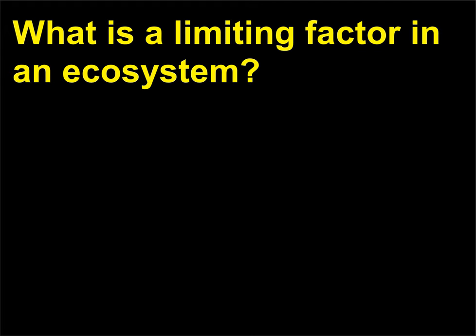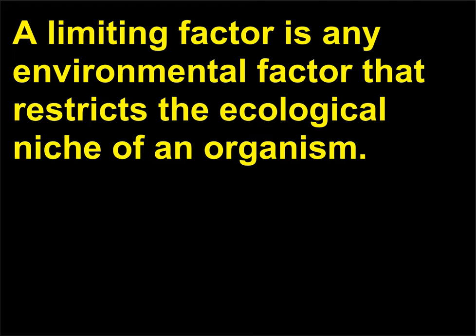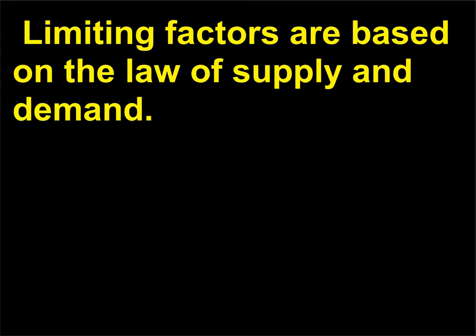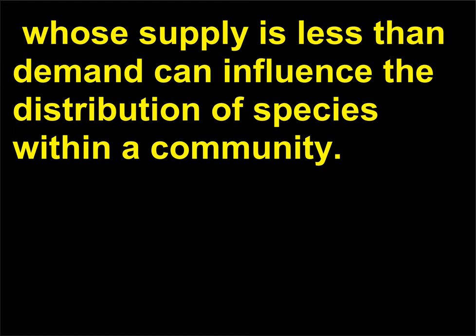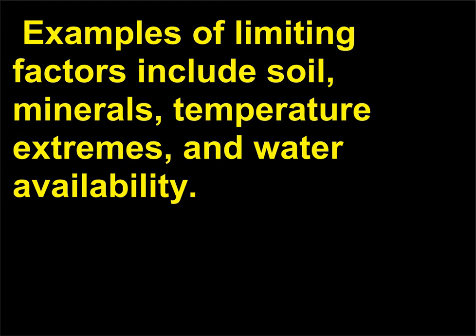What is a limiting factor in an ecosystem? A limiting factor is any environmental factor that restricts the ecological niche of an organism. Limiting factors are based on the law of supply and demand. Those factors—resources—whose supply is less than demand can influence the distribution of species within a community. Examples of limiting factors include soil minerals, temperature extremes, and water availability.